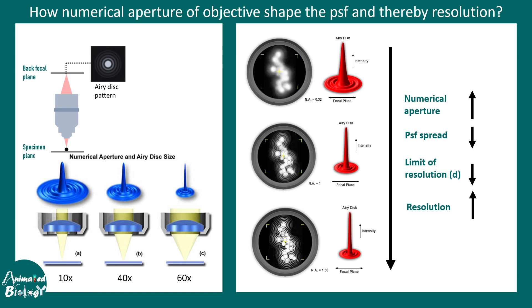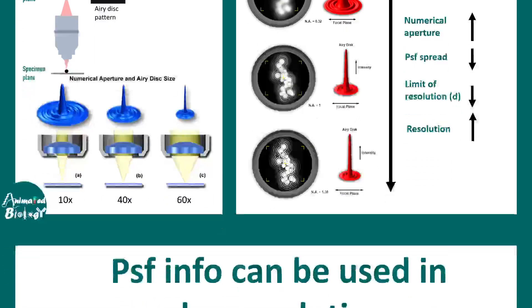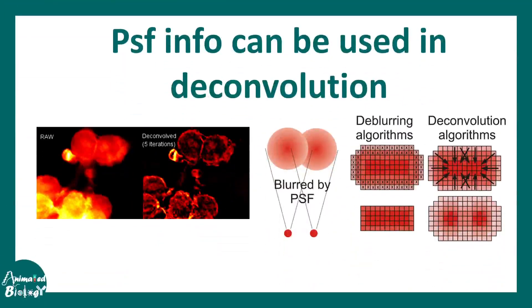The point spread function is the key to understanding the resolution of a microscope. If one knows the point spread function, that information can be used to deconvolve a blurry image into a much sharper and crisper image.